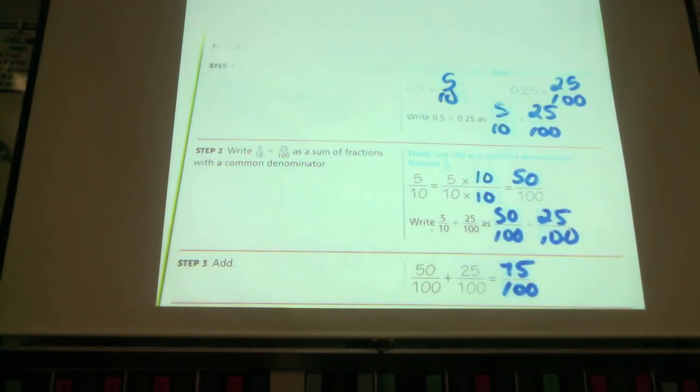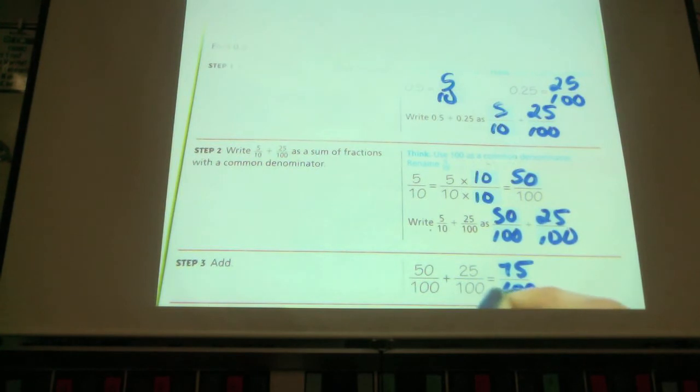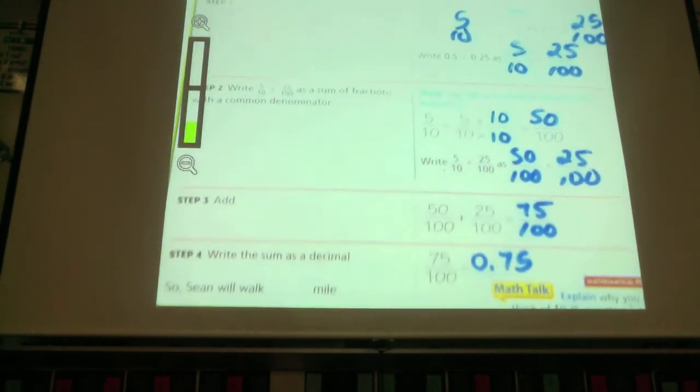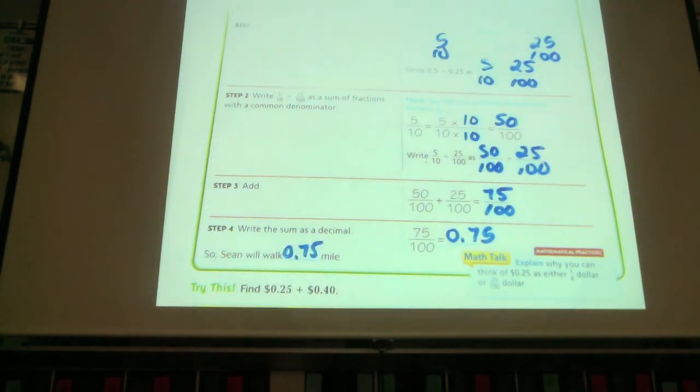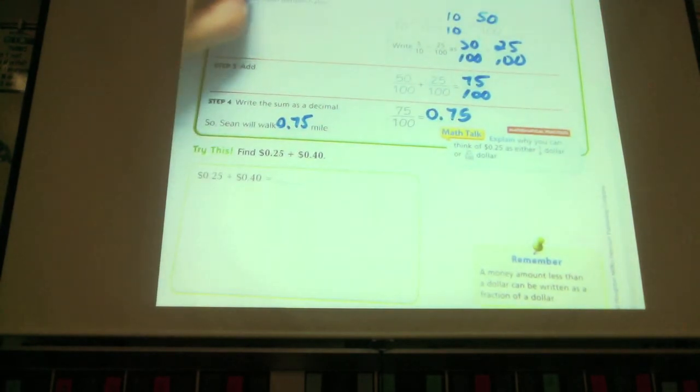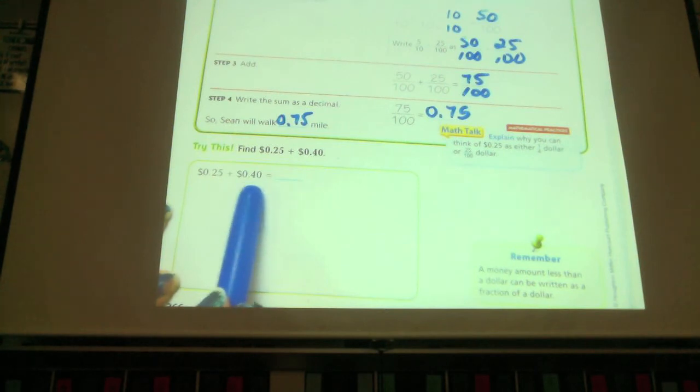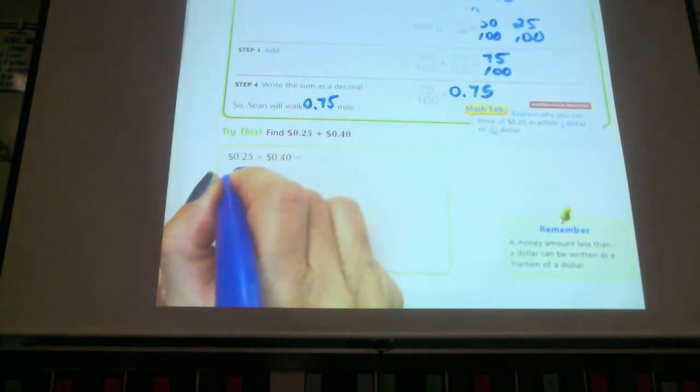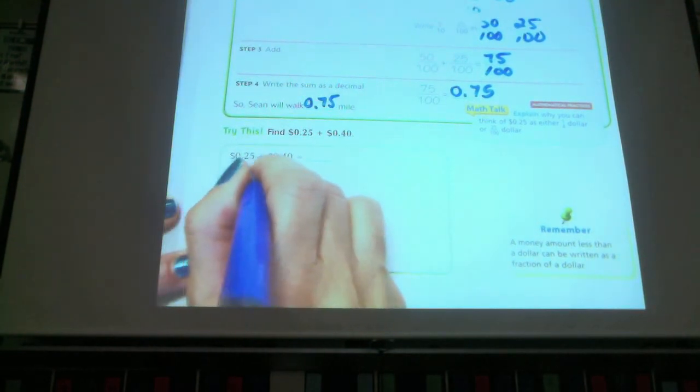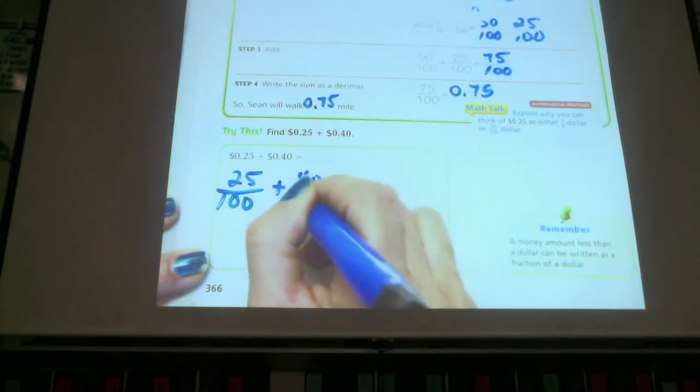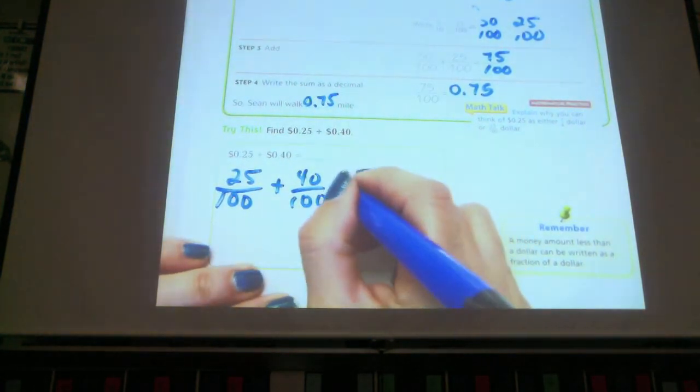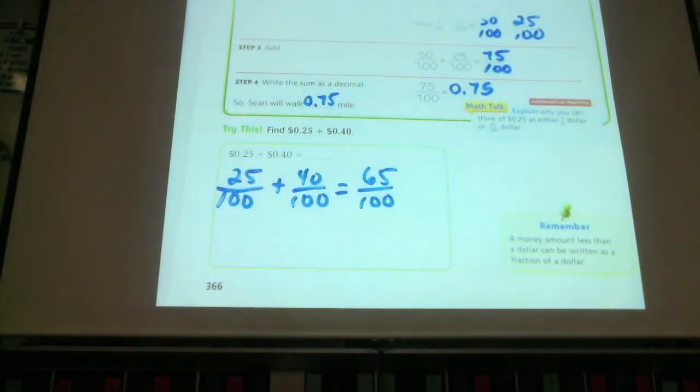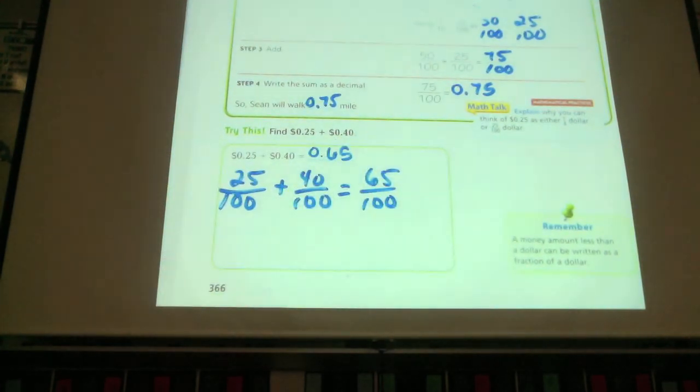Now I'm going to change this fraction back to a decimal. So seventy-five hundredths as a decimal, we know how to do. So Sean walked seventy-five hundredths of a mile. Let's try one that is twenty-five hundredths and, oh look, they gave it to us in hundredths. So when I change this to fractions, I can change it like this. Twenty-five hundredths plus forty-hundredths. Just by reading it, I can see that that's what my fraction should be. Twenty-five plus forty is sixty-five hundredths.